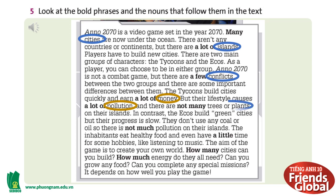In contrast, the Echoes build green cities, but their progress is slow. They don't use any coal or oil, so there is not much pollution on their islands. The inhabitants eat healthy food and even have a little time for some hobbies, like listening to music. The aim of the game is to create your own world. How many cities can you build? How much energy do they all need? Can you grow any food? Can you complete any special missions? It depends on how well you play the game.